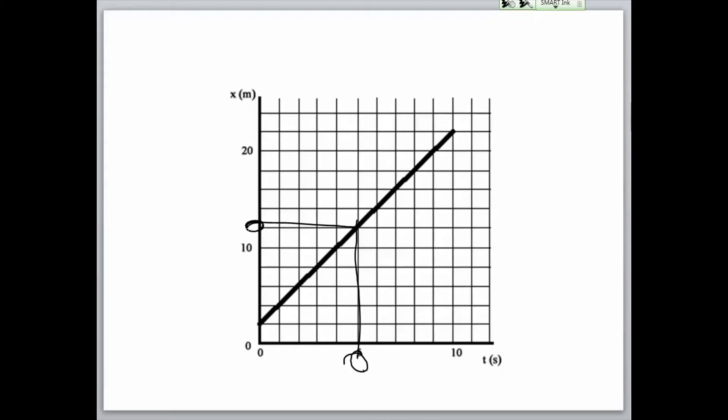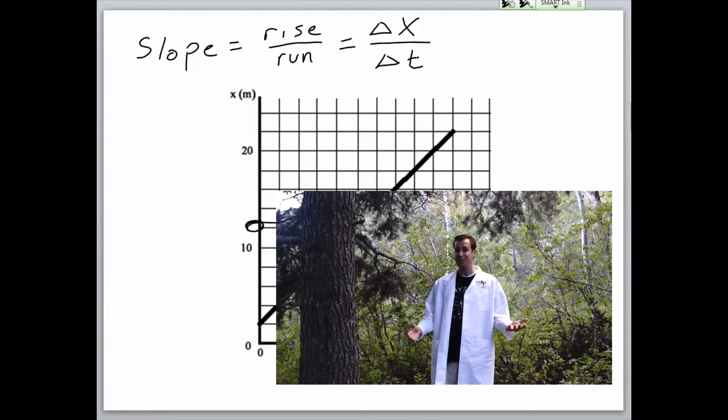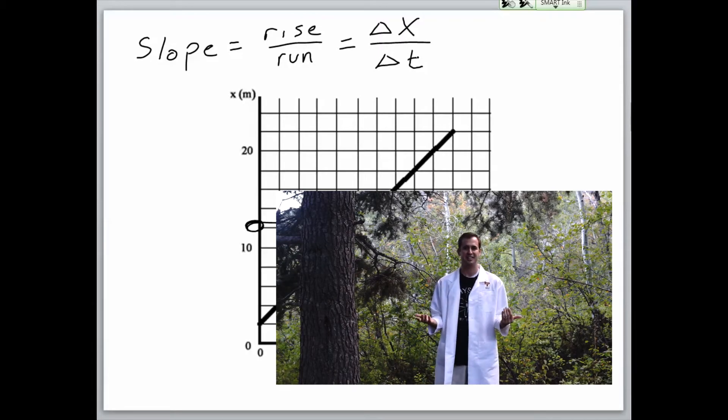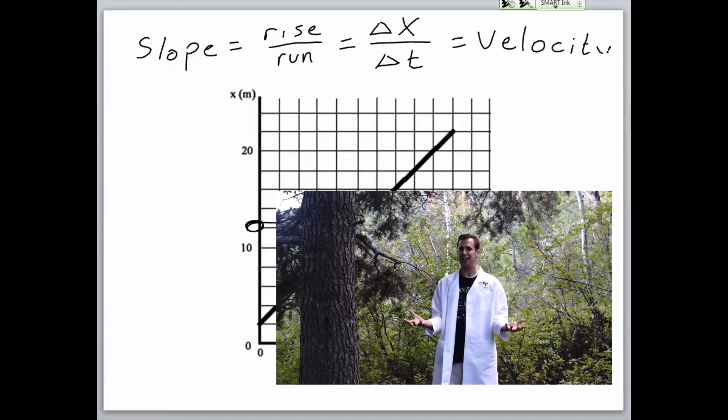Wait, what? How did Mr. Bell come up with that? Well, slope is calculated by taking rise divided by run. The rise is your change in position, or your displacement, and the run is your time. So, slope is displacement divided by time, which is the definition of velocity. That's crazy, huh?